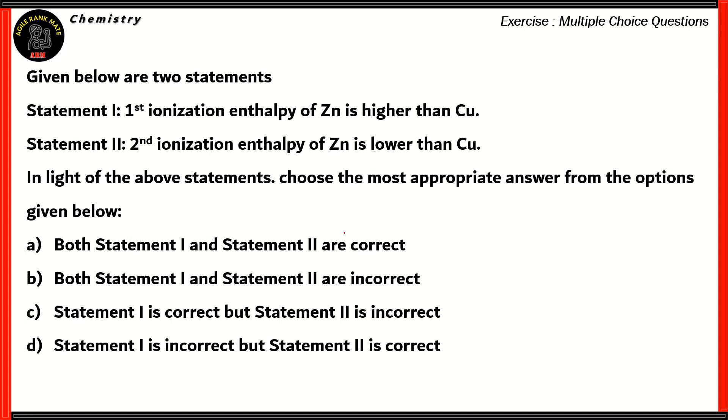Now, let's look at our final question for this particular video. We have two statements. We need to find the most appropriate answer from the options given below. So, let's look at the two statements. Statement one says, first ionization enthalpy of zinc is higher than copper. And the second statement says, second ionization enthalpy of zinc is lower than copper. Now, let's look at both statements. Are they correct or are they incorrect?